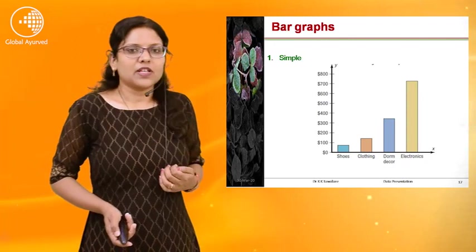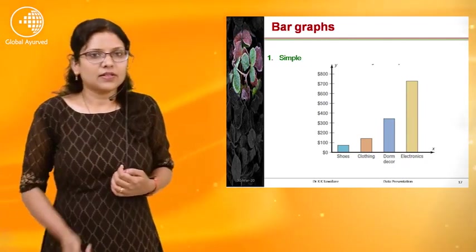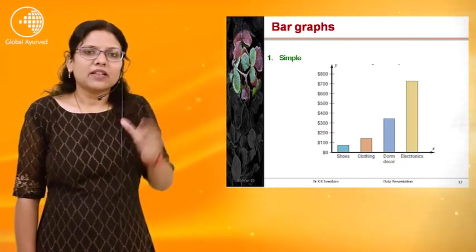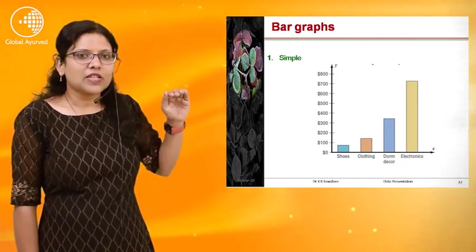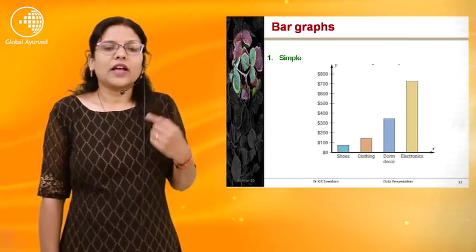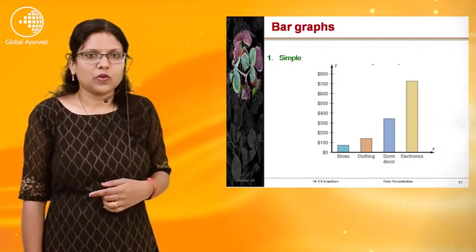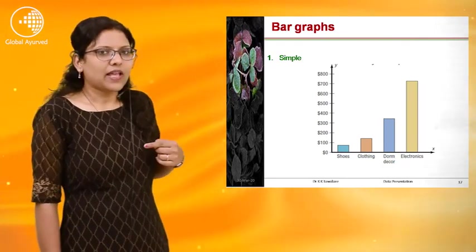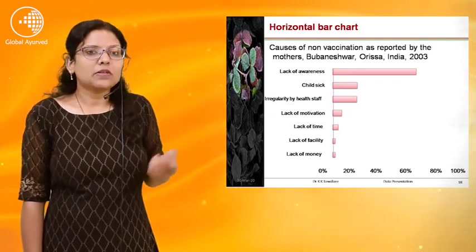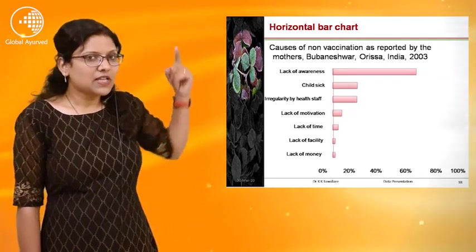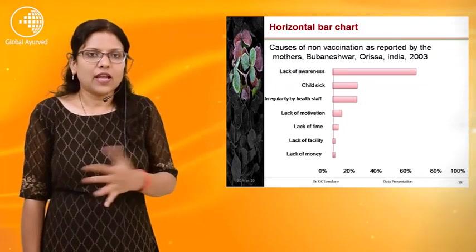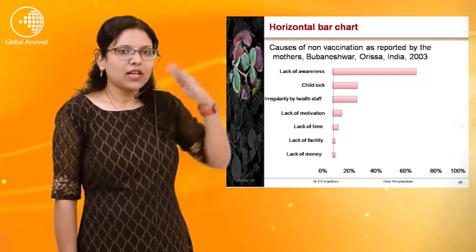Let us now see one by one the presentation of qualitative data. First is the bar graph. A bar chart is a graphical display for qualitative data in which each distinct category is represented by a vertical or horizontal bar whose height is proportional to the frequency or relative frequency of the variable. There are three types: simple, multiple (also called compound), and proportional or component bar graph. We can represent bars vertically or horizontally.